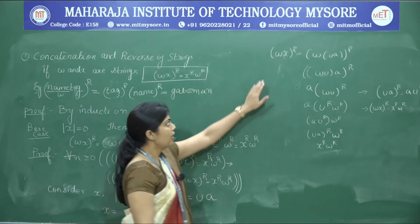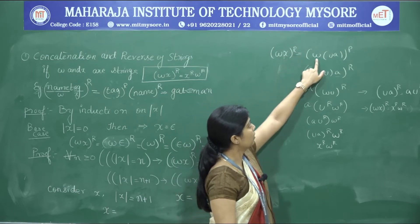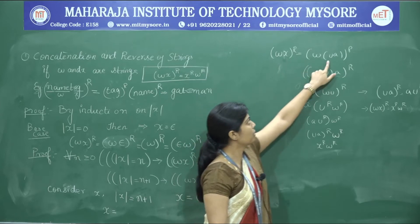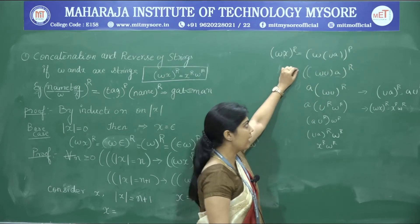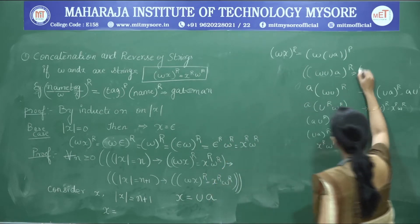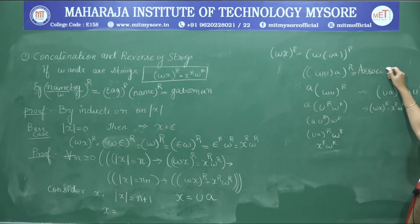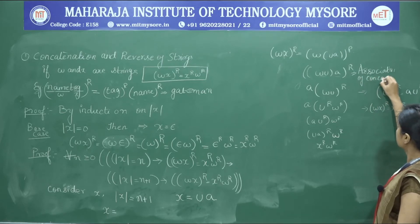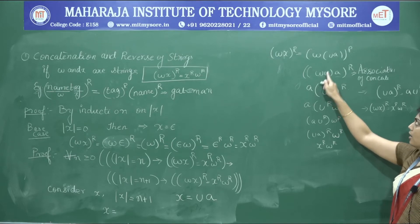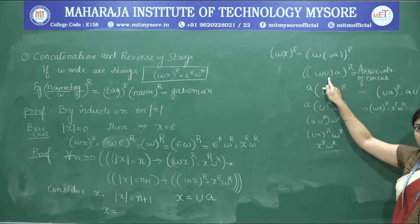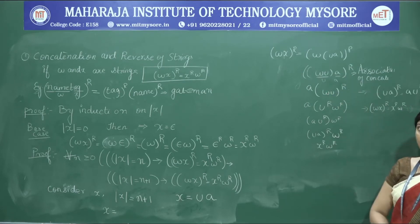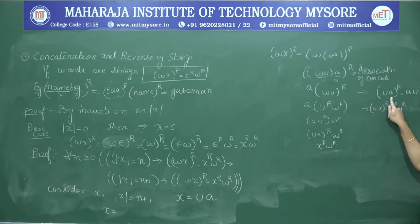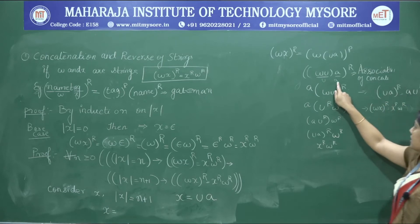We take the LHS: (wx)^R = (w·u·a)^R. Since concatenation is associative, we can rearrange the brackets without changing meaning — (wu)·a treated as one string followed by a. Using the reversal identity from the previous class, (u·a)^R = a · u^R, so the last character a comes to the beginning and we take the reverse of the rest.